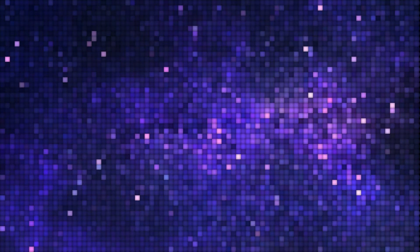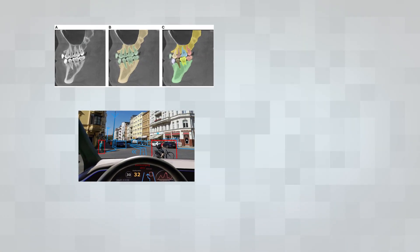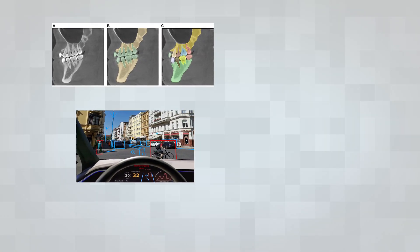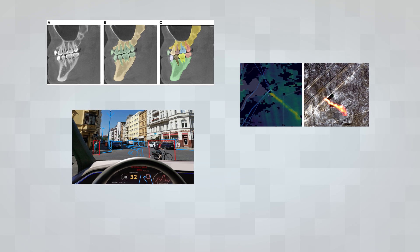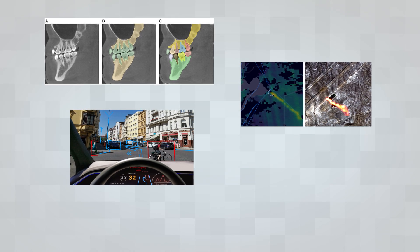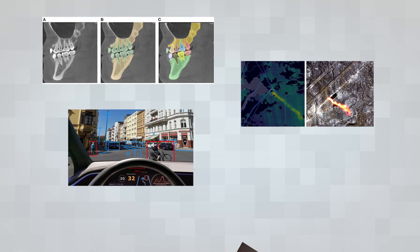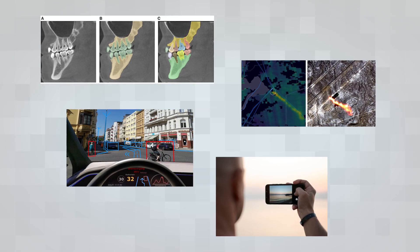We can find these deep learning models everywhere, from self-driving cars to image segmentation on X-rays, satellite imaging for detecting gas leaks, and of course smartphone photography.